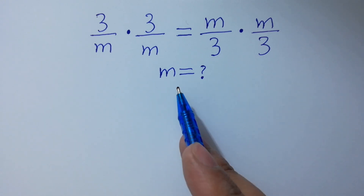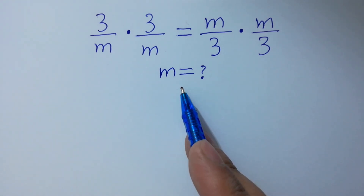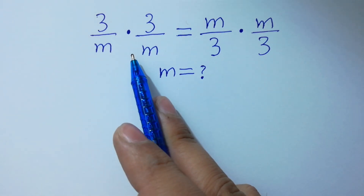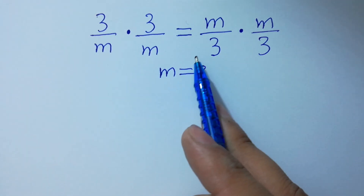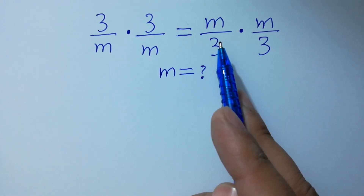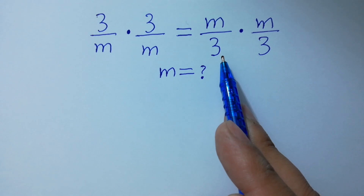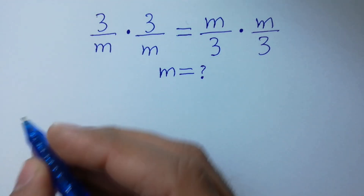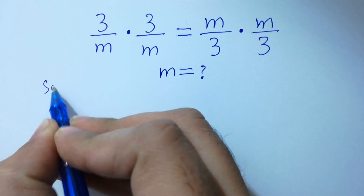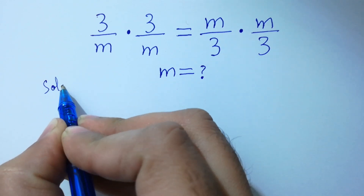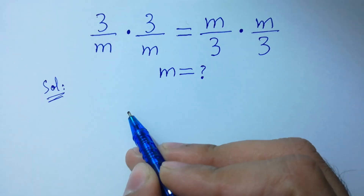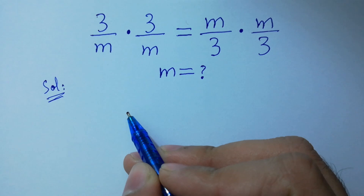Hello friends. Find the value of m if (3/m) times (3/m) equals (m/3) times (m/3). Let's have a solution. This is a very easy question.